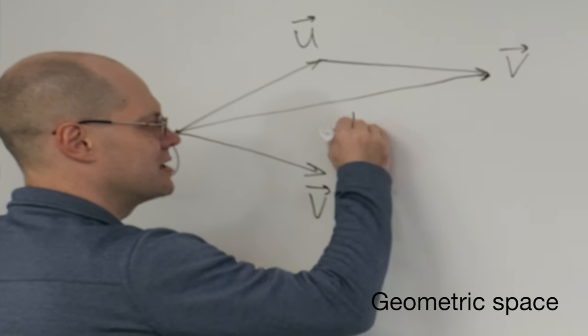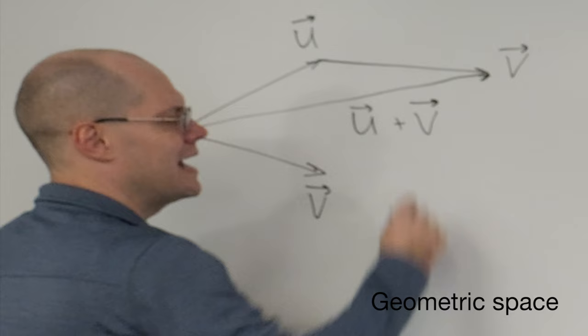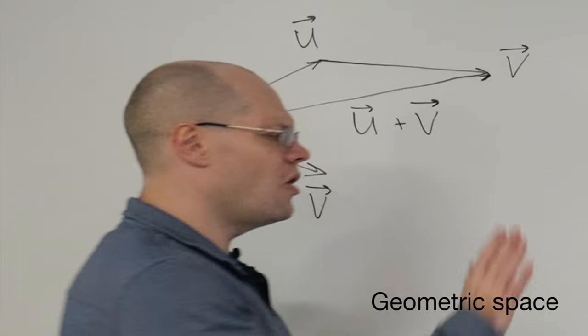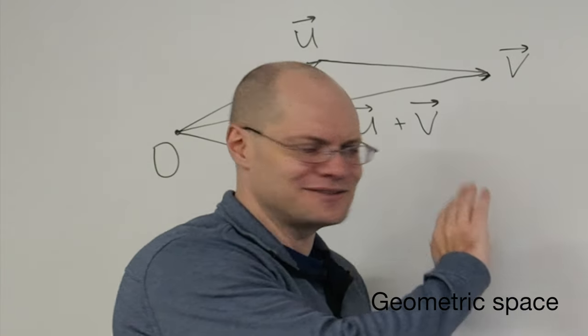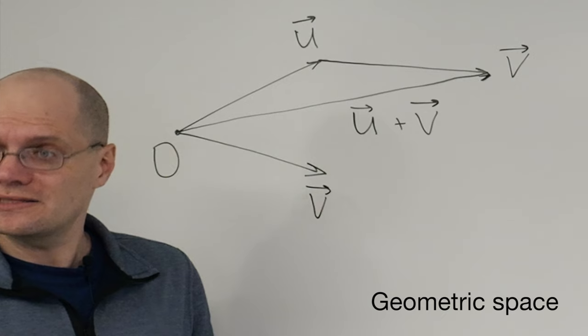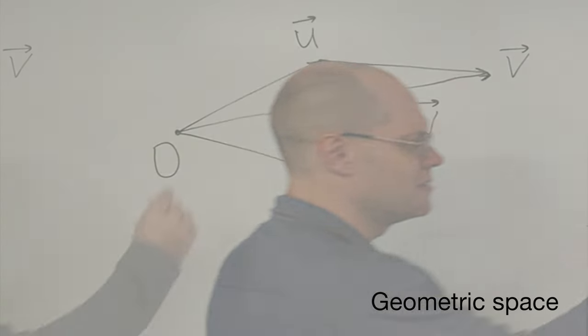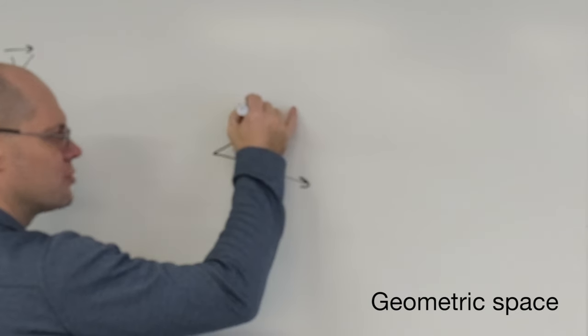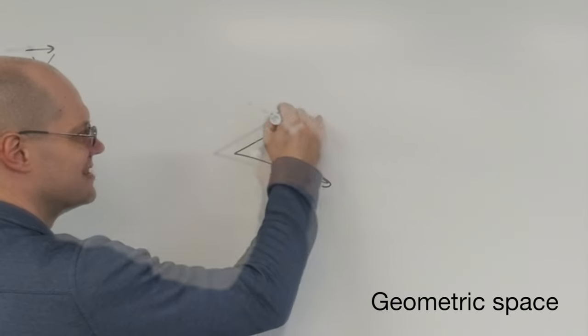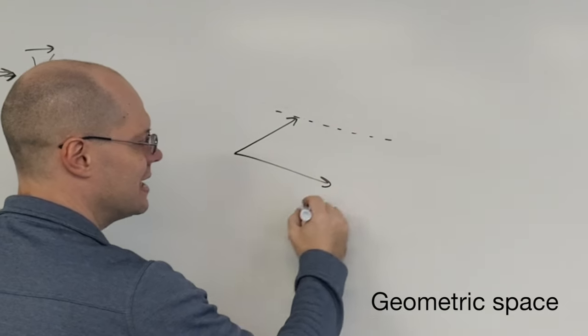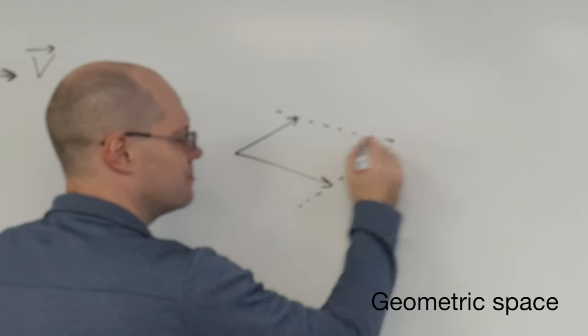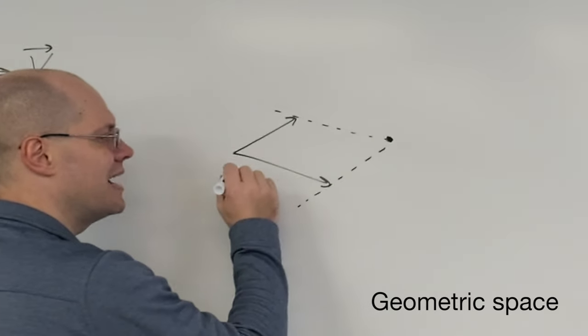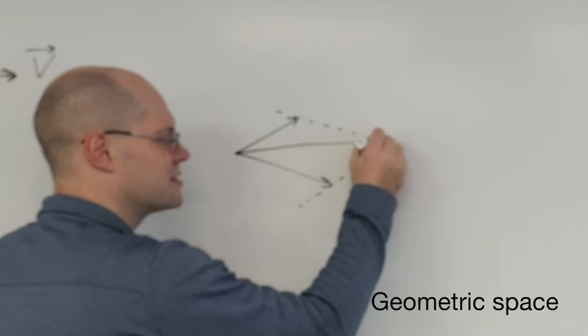To add two objects of this kind, you have to take one of them and translate it in parallel fashion to the tip of the other. If this is U, I'll put a little arrow over it meaning geometric vector, and this is V, then you just conveniently bring V over here. You connect the origin to the tip of V, and that is U plus V. Now I at least defined addition.